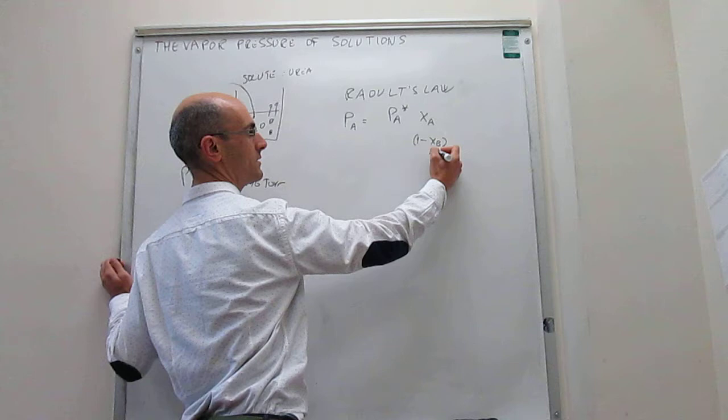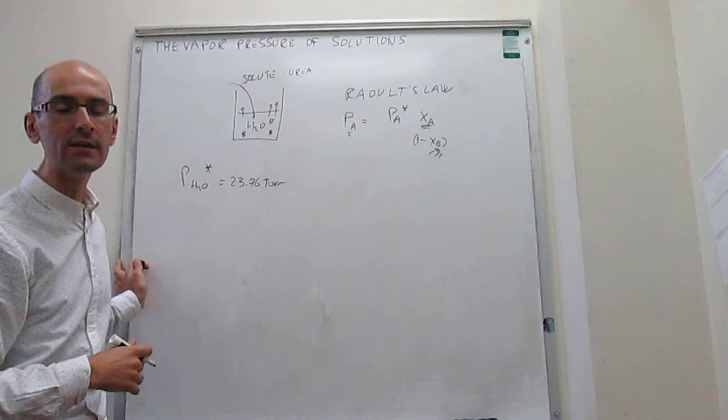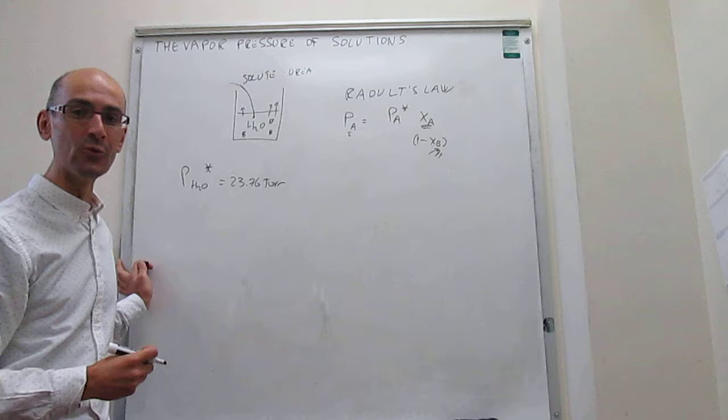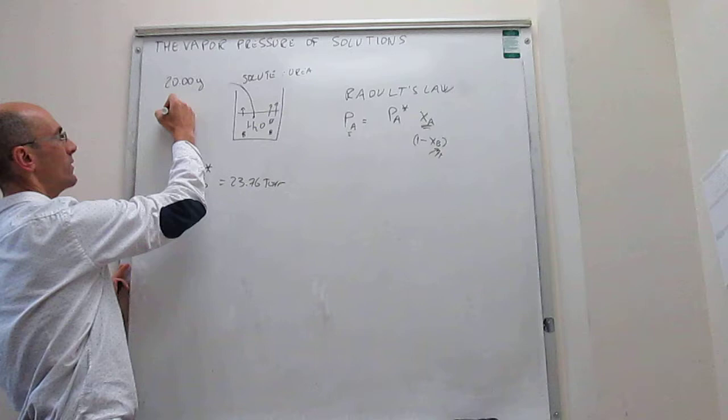So notice that if you add solute, what you are doing is decrease the mole fraction of the liquid in that mixture. And what that means is that the vapor pressure of that liquid should go down linearly according to the mole fraction. To illustrate this Raoult's law, we are going to run a numerical problem in which we are going to add 20 grams of urea to a solution that is made with 125 grams of water.